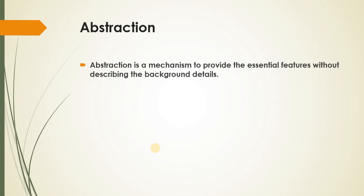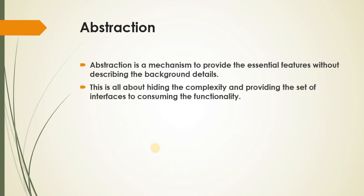Now the next concept is abstraction. Abstraction is a mechanism to provide the essential features without describing the background details. In our object-oriented programming, or C Sharp language, functions or methods are the best examples of abstraction. This is all about hiding the complexity and providing a set of interfaces for consuming the system. For a real-world example, if we have a mobile: we can send a message, we can call someone. We know how to dial a number and how to send a message, but internally how the functionality works, we don't know — that comes under abstraction.